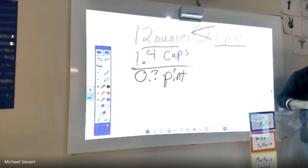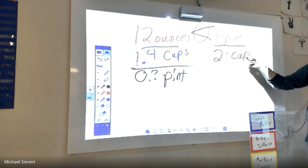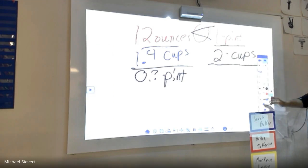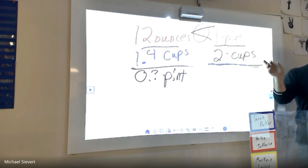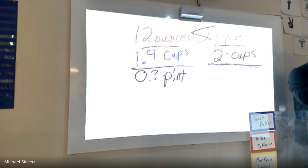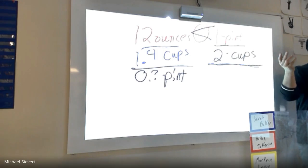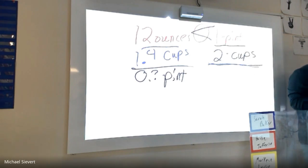Let's change one pint into cups. How many cups does one pint equal? Two cups. Now, how many ounces are in one cup? Marquis — eight ounces. How many cups do you have? Show me with your fingers. Two cups. So what do you do with the eight? You multiply eight by two. Jonathan, what's eight times two? Sixteen.